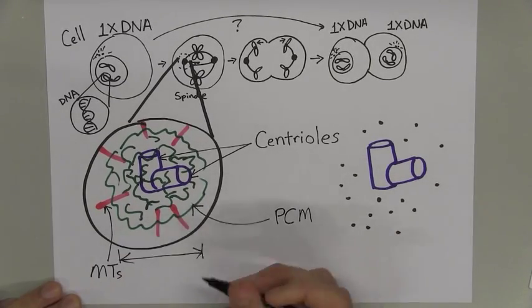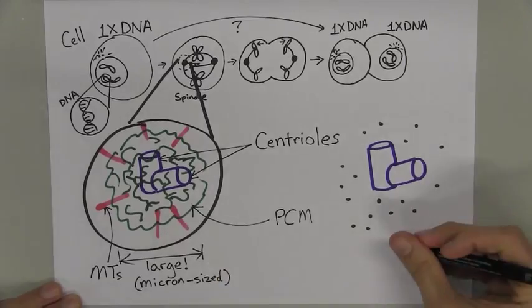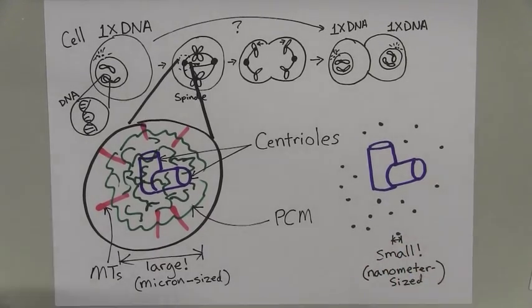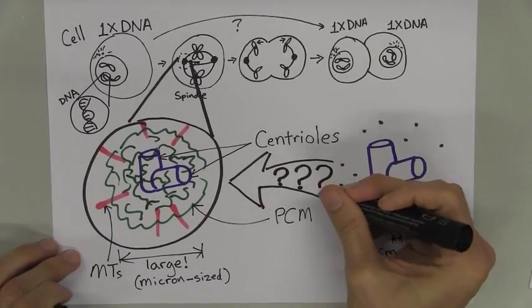I'm interested in how the PCM, which is a micrometer-scale organelle, is assembled from thousands of nanometer-scale proteins that are diffusing in the cytoplasm.